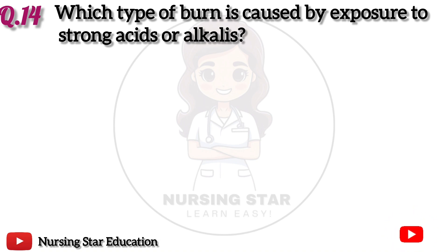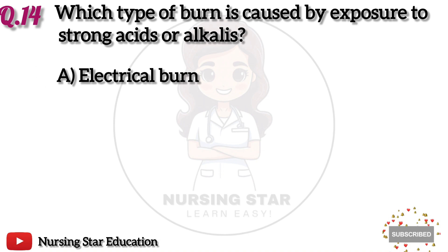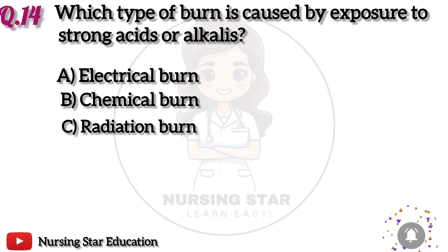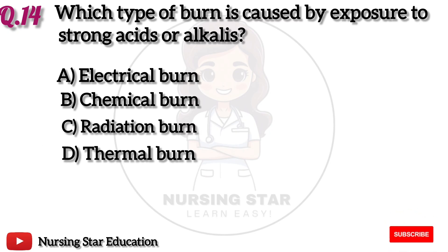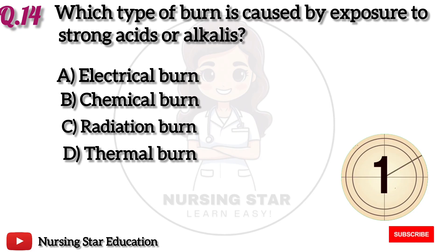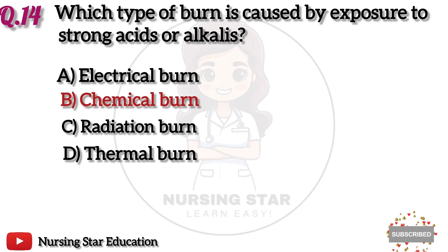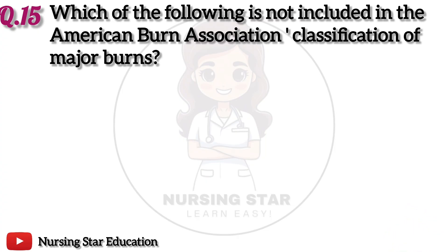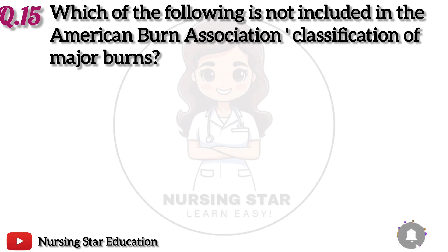Question 14: Which type of burn is caused by exposure to strong acids or alkalis? Option A: Electrical burn. B: Chemical burn. C: Radiation burn. D: Thermal burn. The correct answer is B: Chemical burn.